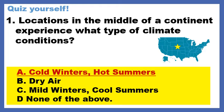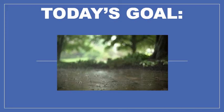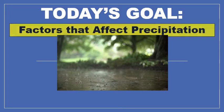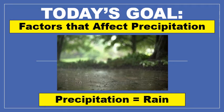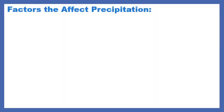Again, you are too far away from a body of water to be affected or influenced by it. Today we're going to talk about something a little bit different. The goal of today is to learn about factors that affect precipitation — and remember that precipitation is a fancy science word for rain.